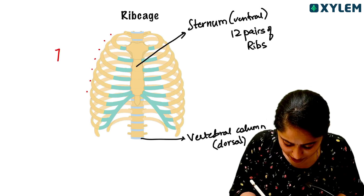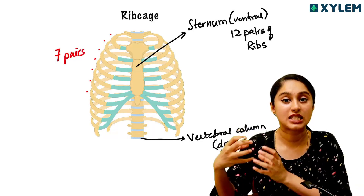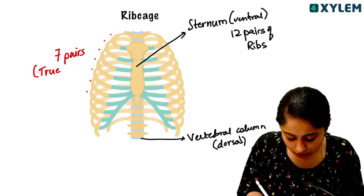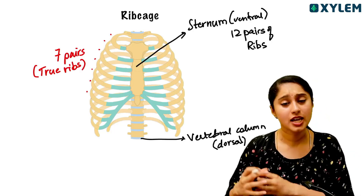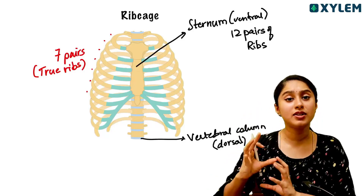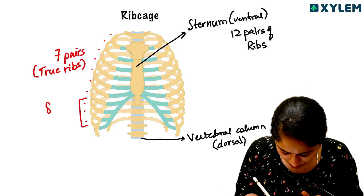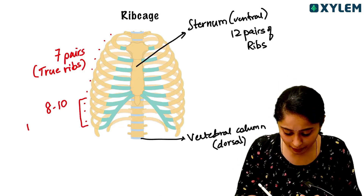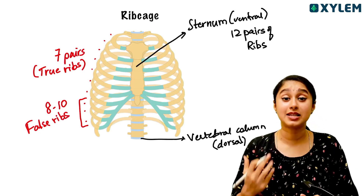Seven pairs are directly attached to the sternum, so we call them the true ribs. The first seven pairs of ribs are the true ribs. After that, the eighth, ninth, and tenth pairs of ribs — we call them false ribs.